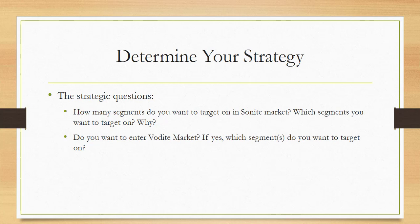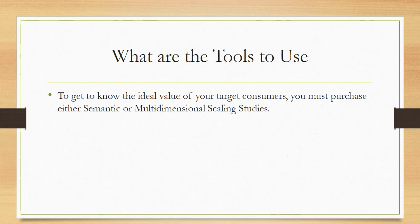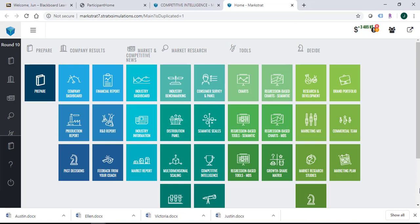The next question is related to VodaMarket: do you want to enter it? If yes, which segments do you want to target? Once you determine your target segments, you need to identify your target consumers' ideal value along the different product characteristics, then modify your brand to be as close as possible to that ideal value. This strategy is the same for both SonaMarket and VodaMarket. To get to know the ideal value of your target consumers, you must purchase either semantic or multidimensional scaling studies. I want to show you where to find that information and how to implement the strategy.